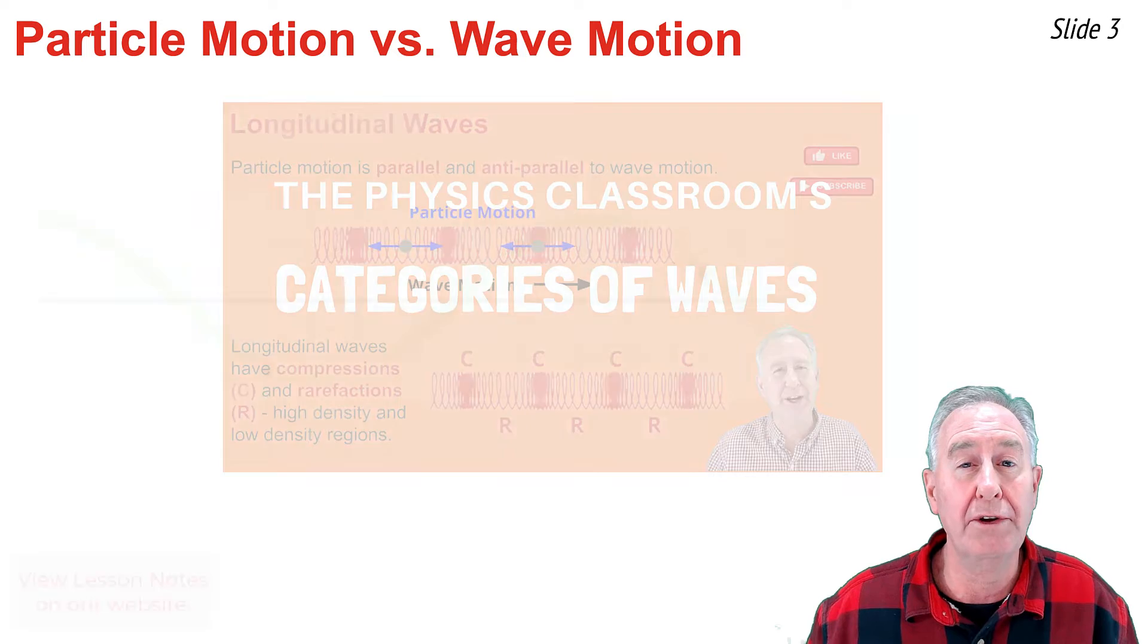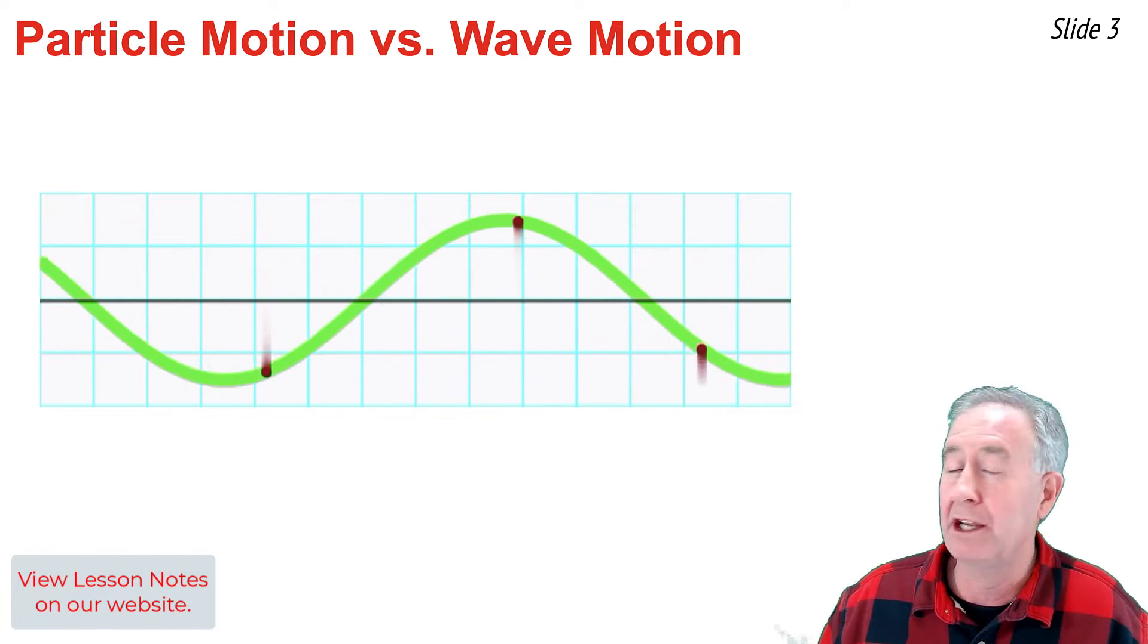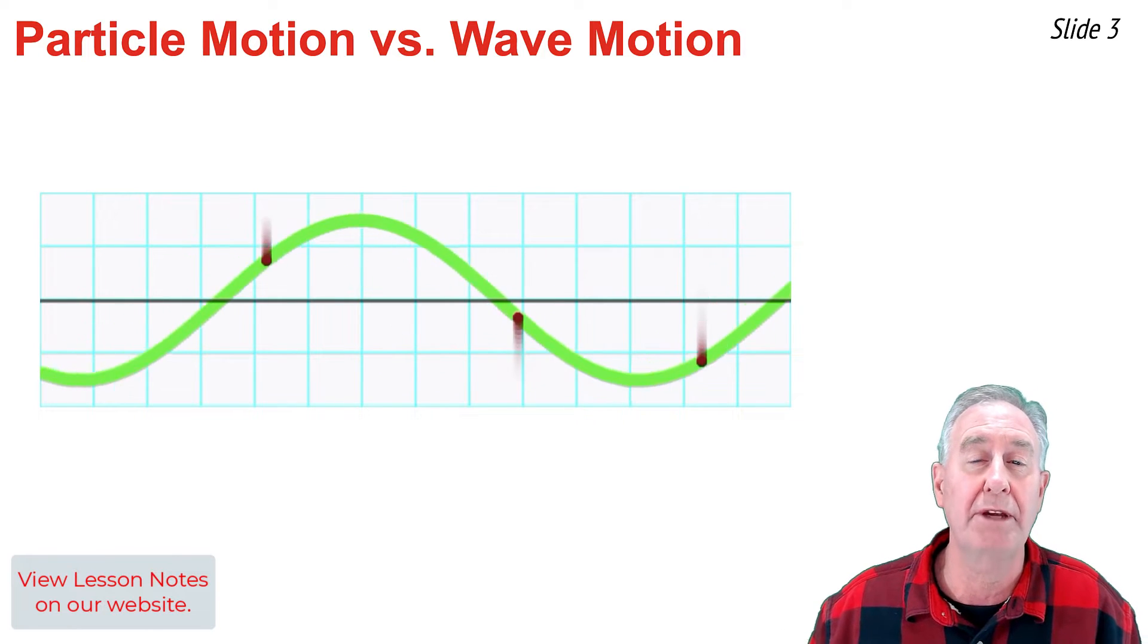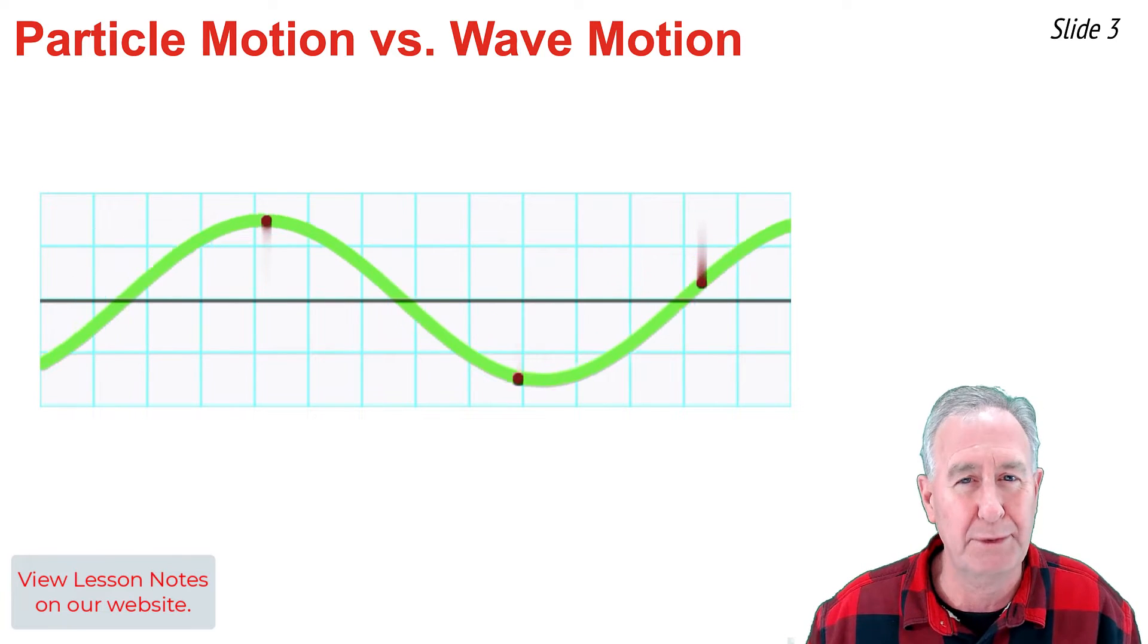One way to categorize waves is to look at the manner in which the particles move within the medium relative to the direction that the waves move. In this animation, we observe that the particles of the medium are moving up and down as the familiar pattern of crests and troughs move from left to right.